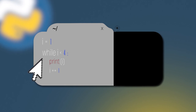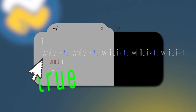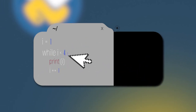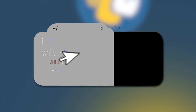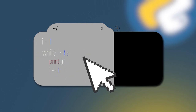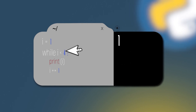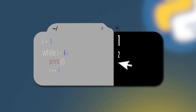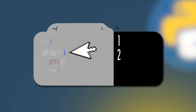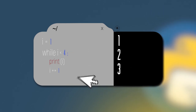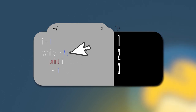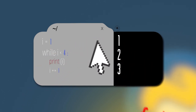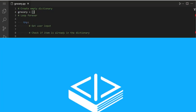Let's understand with this example. We set variable i equal to 1, then create a while loop that runs while i is less than 4. In the first iteration, i is 1 — since 1 is less than 4, we stay in the loop, print i, and increment by 1. Next iteration i is 2, still less than 4, so we print 2 and increment again. When i reaches 4, the condition is no longer true, so we exit the while loop.